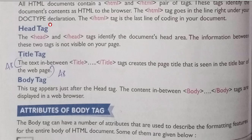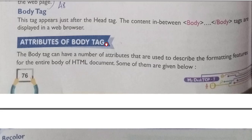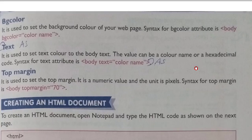Next, the body tag — the most important tag. This tag appears just after the head tag. The content between the body opening and closing tags is displayed in the web browser, so whatever you write between the body tag will be displayed on your web page. Now, attributes of the body tag: the body tag can have a number of attributes used to describe formatting features for the entire HTML document. Three are given: bgcolor, text, and topmargin. Bgcolor we have already discussed — it changes the background color of your web page.